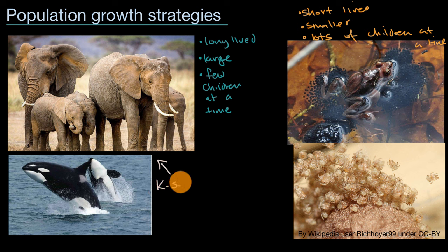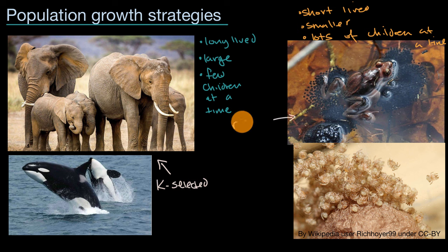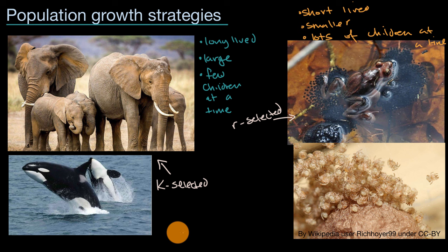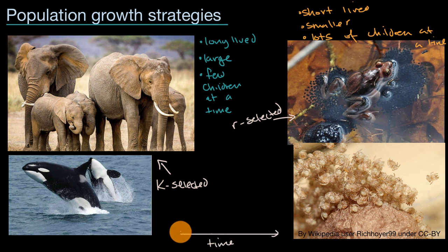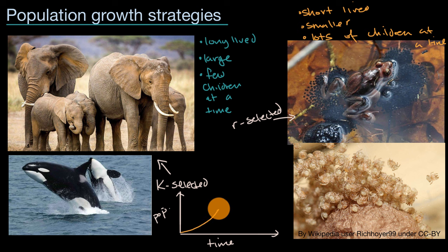Generally speaking, folks have attempted to classify these types of species. They call them K-selected — and I'll talk about where the K comes from in a second — and they talk about the other types of species as R-selected. Where these letters come from is a general idea: if we draw an axis for time and a vertical axis for population, most species, when there's not a lot of them and they're not limited by resources, will grow exponentially.